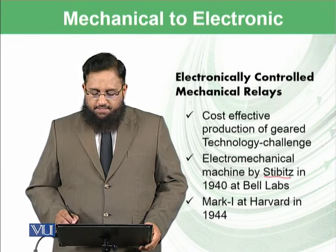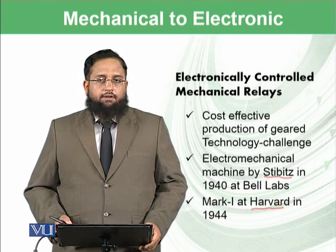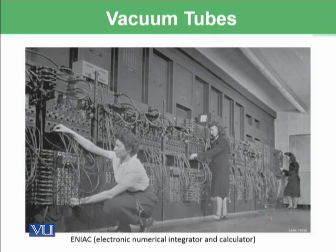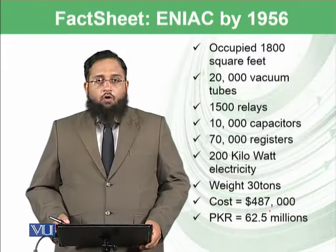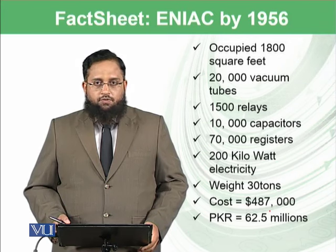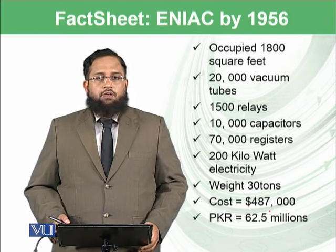There were other efforts, like Stibitz from Bell Labs and efforts at Harvard, where they made electromechanical devices and controlled relays electromechanically. One of the early stage computers is known as the Electronic Numerical Integrator and Calculator, or ENIAC. You can see it is a huge computer with many vacuum tubes that could only perform very small calculations. Even your smartphone nowadays is smaller than these large computers. This computer occupied 1,800 square feet — equivalent to around a 10-Marla house.